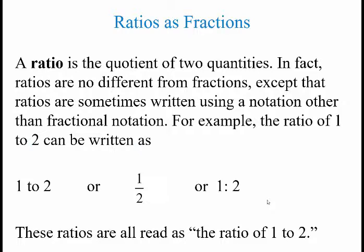So ratios as fractions — a ratio is the quotient of two quantities. Ratios are no different from fractions, except that ratios are sometimes written using a notation other than fractional notation. For example, the ratio of one to two can be written three ways: as 'one to two' with the word, as a fraction one over two, or using colon notation 1:2. All are read as the ratio of one to two, whether written as a fraction or in ratio notation.